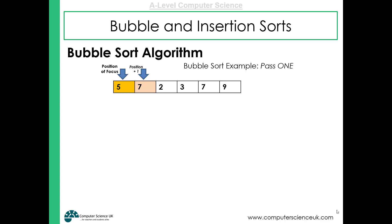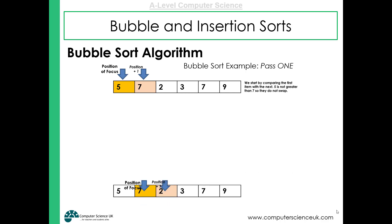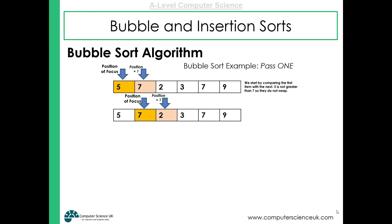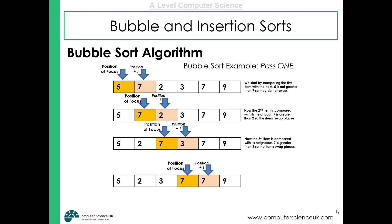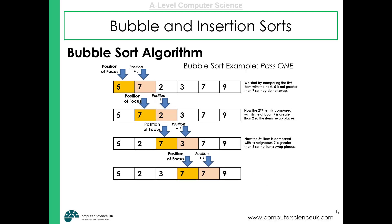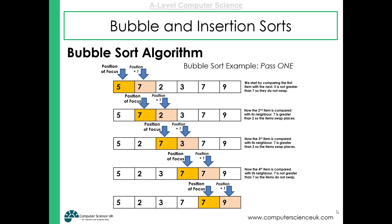It comes to the first pair, which is five and seven — they are in the right order, so it moves on to the next pair, which is seven and two. These are not in the correct order, so they swap: the two moves down and the seven moves up. The algorithm moves on to seven and three — again in the wrong order, so they swap. Then seven and seven are in the correct order, and seven and nine are also in the correct order, so they do not change position.